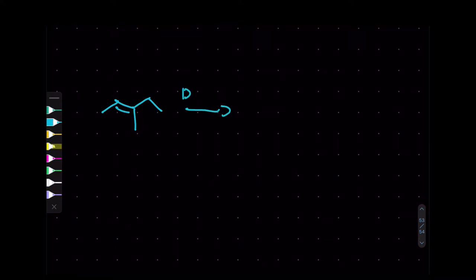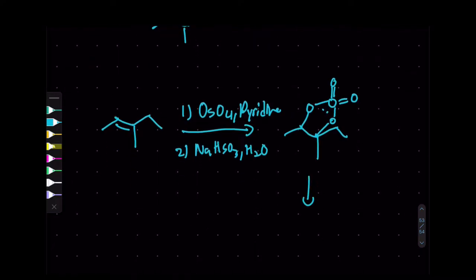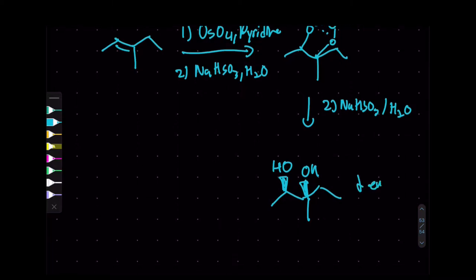Next is the osmium reaction. There are two similar reactions. The first uses OsO4 with pyridine, and the second step uses NaHSO3/H2O. Osmium makes a carbenoid-like intermediate and attaches two oxygens. In the second step, NaHSO3/H2O protonates it, and we form a syn-addition of diols — syn diol — along with enantiomers.